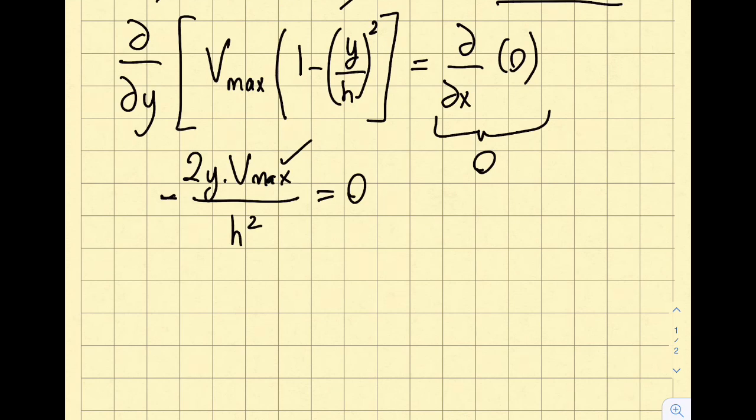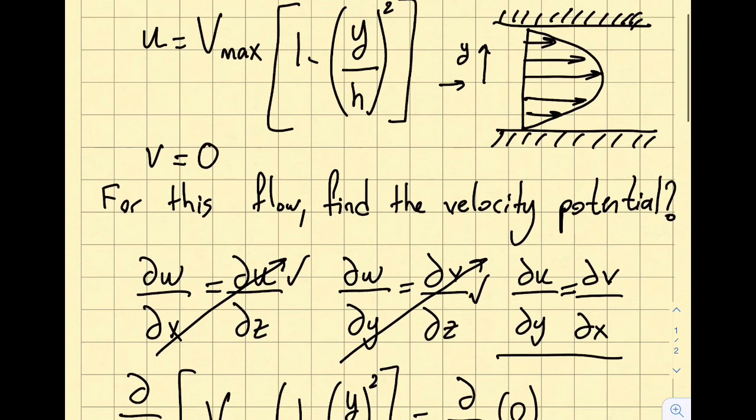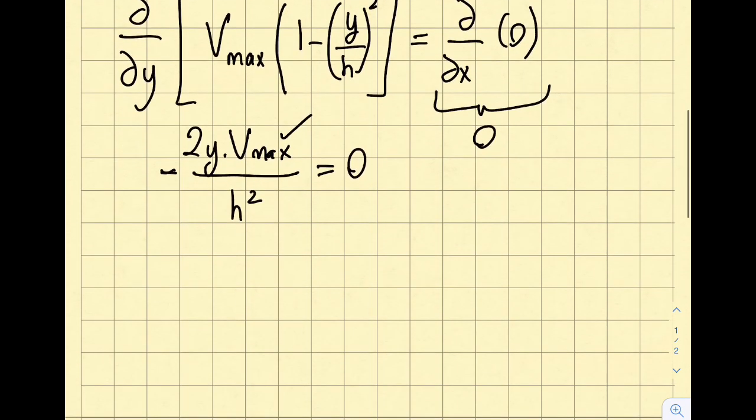H is some particular distance. I can go up here and indicate that this is going to be h and this is going to be h as well. It's just a particular number. So this is not satisfied, so by looking at it you should be able to identify and say that the velocity potential does not exist.